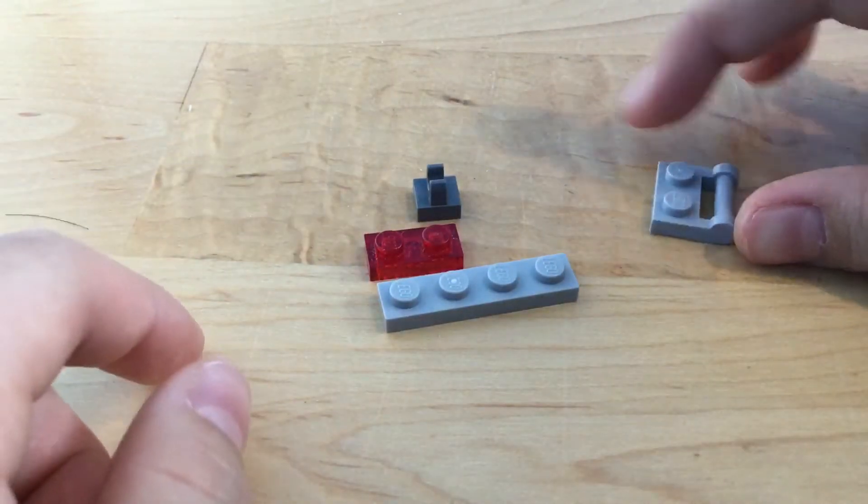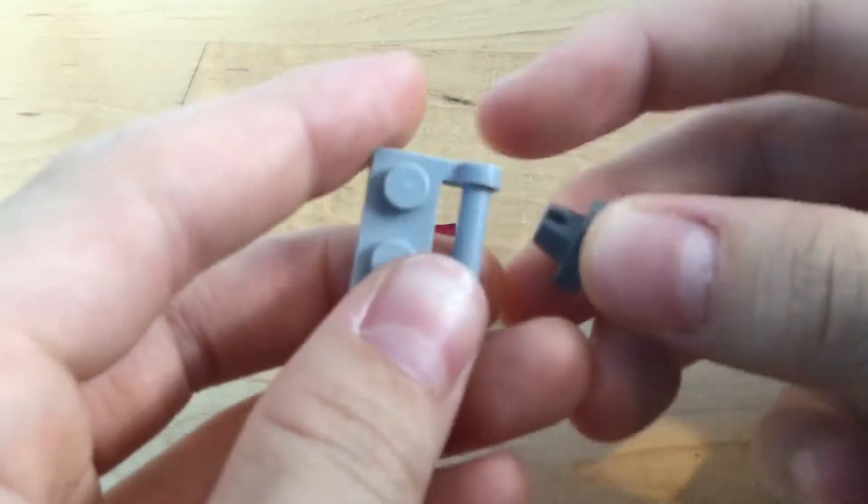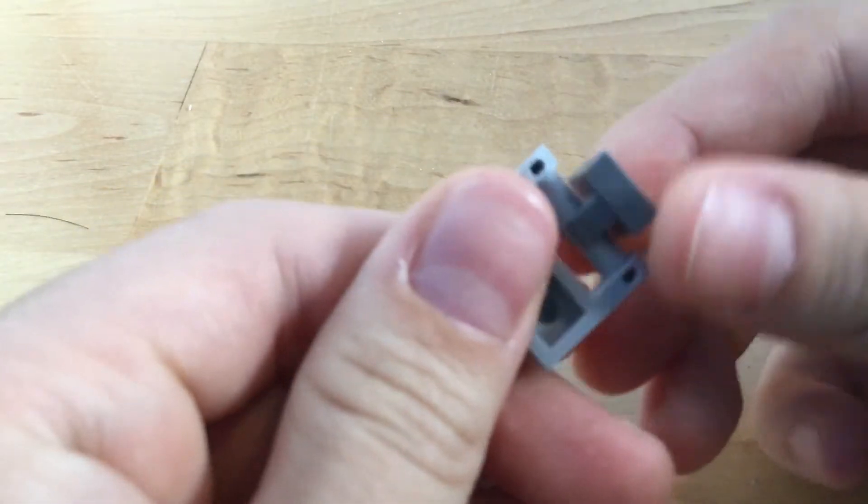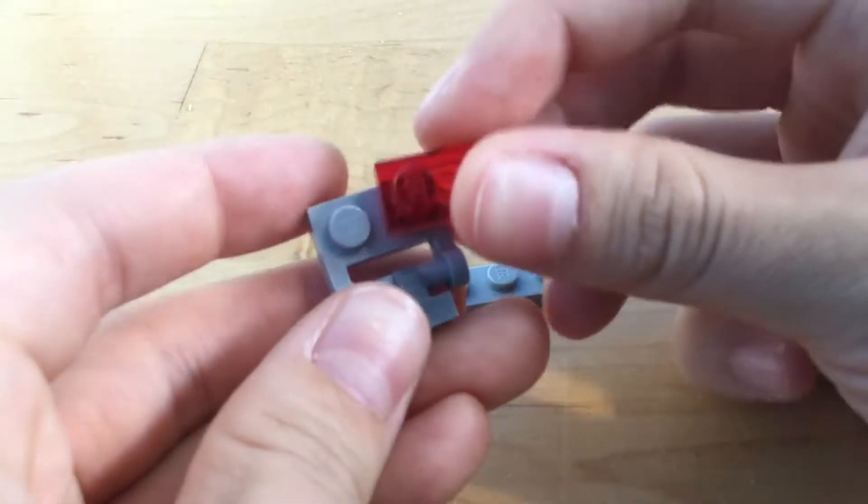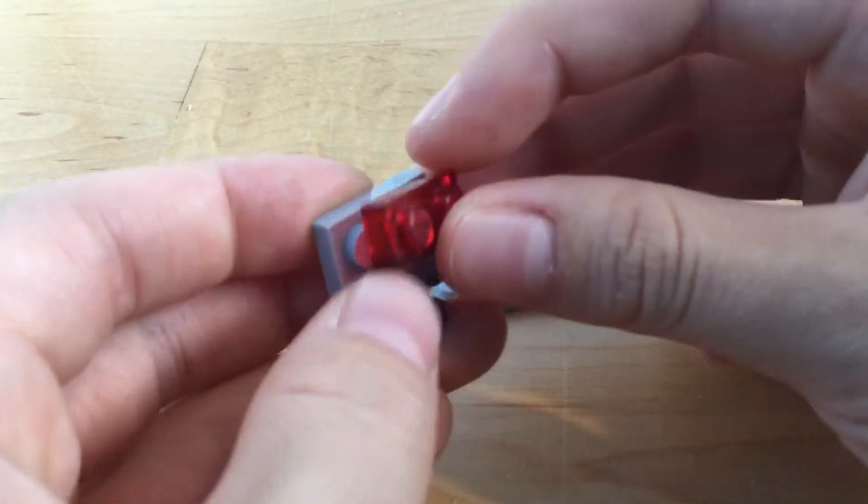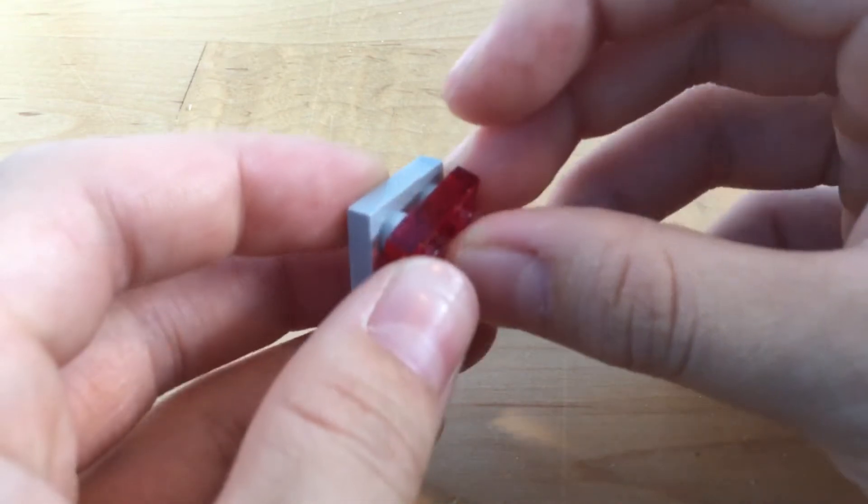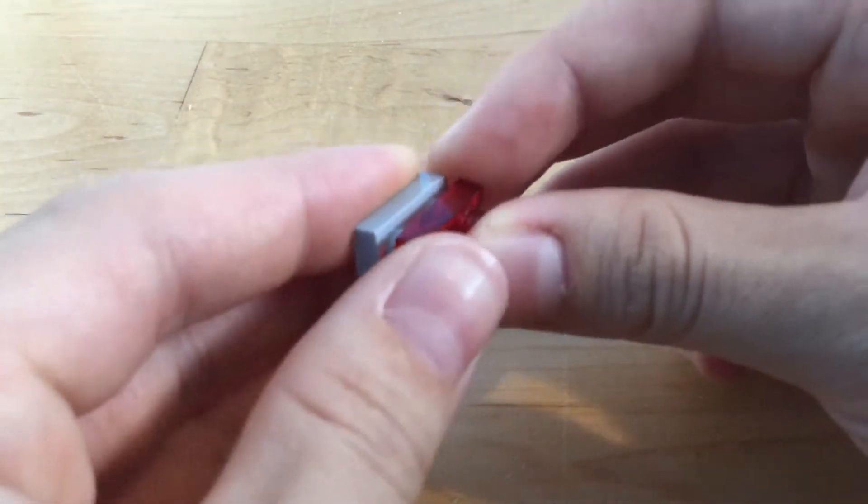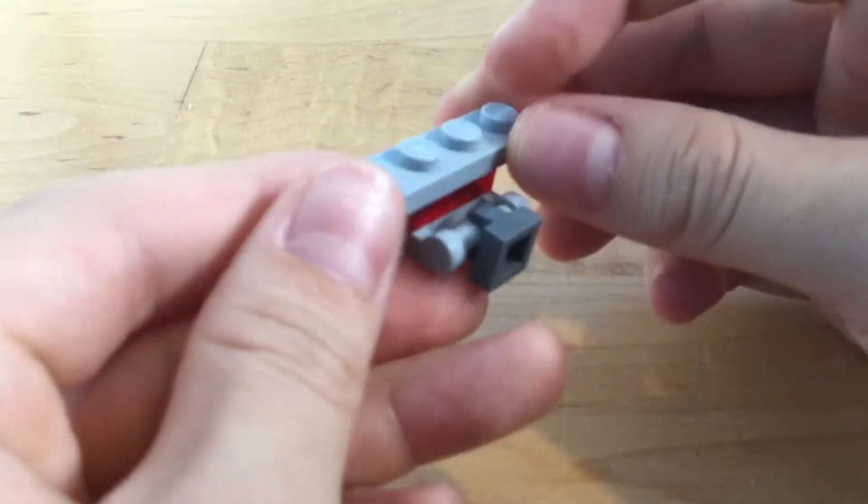So just grab a one by two hidden piece, just kind of clip it onto the middle like that. And then after that grab a one by two clear, I mean, I don't know this kind of spoiler, just place it on top just like that. Put that aside.